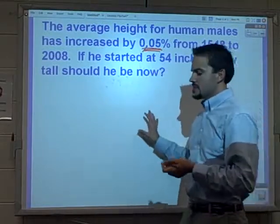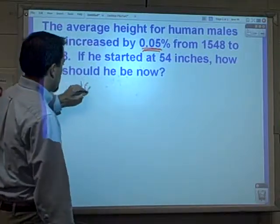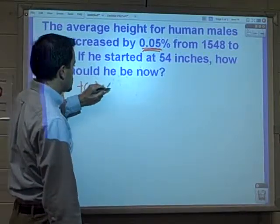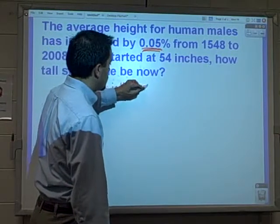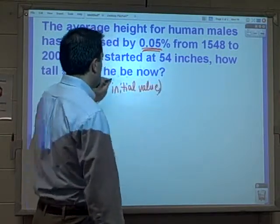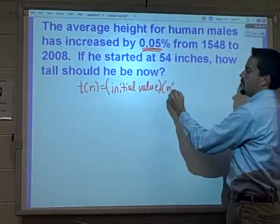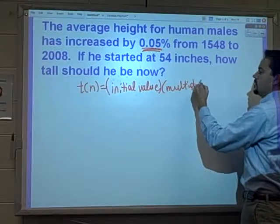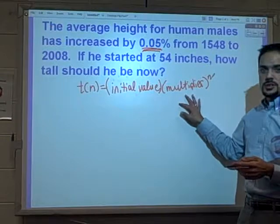So when I look at this and I say, okay, well first of all, what's the starting value? Remember when we set up these equations, I wrote this on the board. The initial value times our multiplier. And then we stuck the n over there to make it look like an exponential equation.